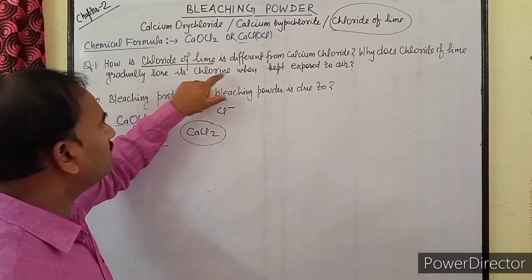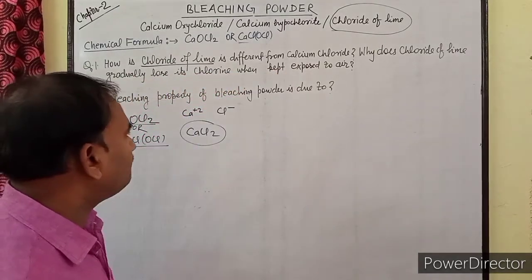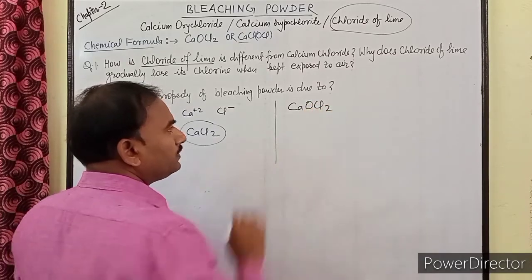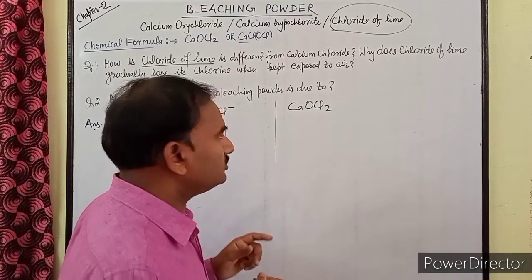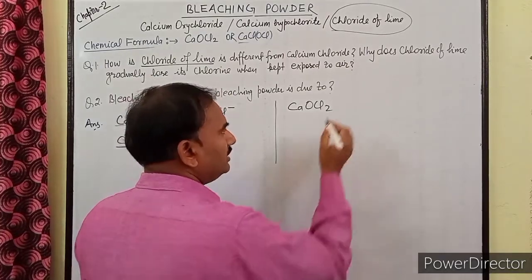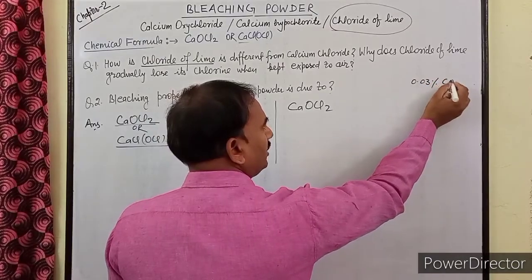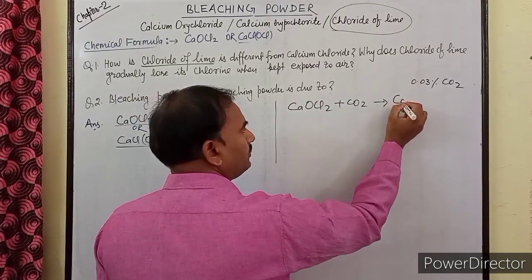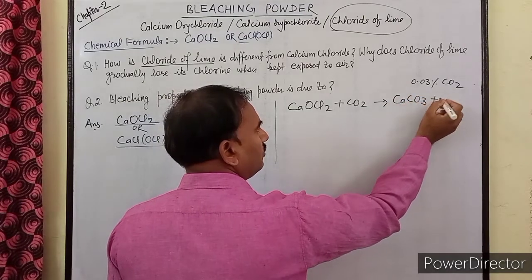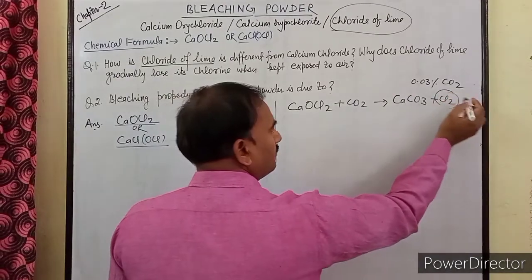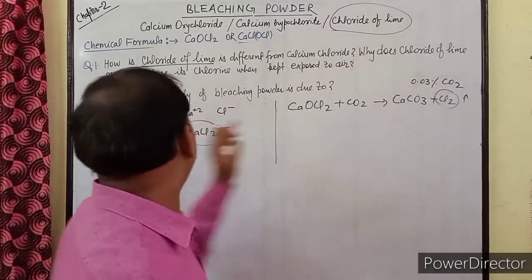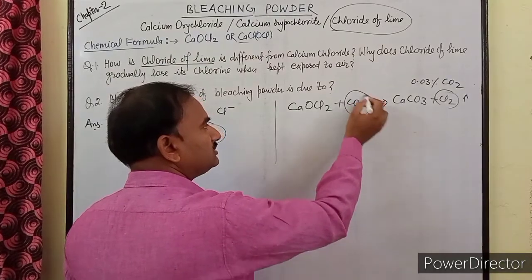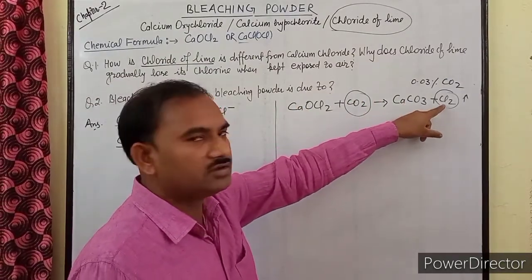दूसरा question है: Why does chloride of lime (bleaching powder) gradually lose its chlorine when kept exposed to air? जब bleaching powder CaOCl₂ को air में expose करके रखा जाता है तो atmosphere में मौजूद CO₂ (0.03%) से reaction करके calcium carbonate और chlorine gas बनाता है। यही chlorine gas यहाँ से release होती है। इसलिए air में रखने पर bleaching powder chlorine खो देता है।